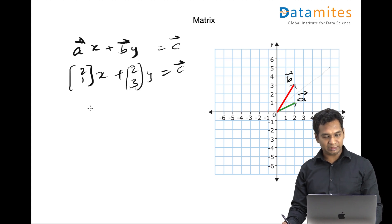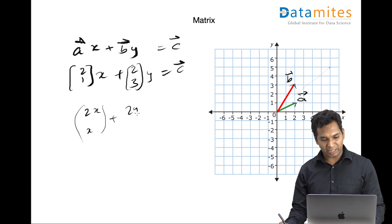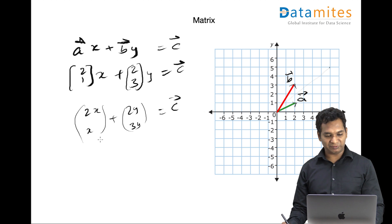And if you just calculate this, it just becomes 2x and x, plus 2y, 3y. And if you add it, we know we add corresponding things, so it's actually 2x plus 2y and x plus 3y.